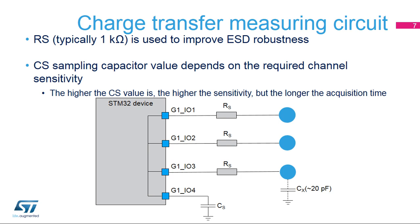In both modes, the end-of-acquisition and/or max-count error can be managed either by polling or interrupt. In addition to managing the charge transfer capacitive acquisition principle, the TSC peripheral allows the designer to individually control the analog switch and Schmitt trigger hysteresis of I/Os belonging to analog I/O groups. This capability could be useful to implement a different capacitive sensing acquisition principle or for other purposes such as an analog multiplexer. The TSC peripheral offers two interrupt sources: end-of-acquisition, which notifies the CPU when all active channels are acquired, and max-count error, which is set when the acquisition fails on one or several channels.